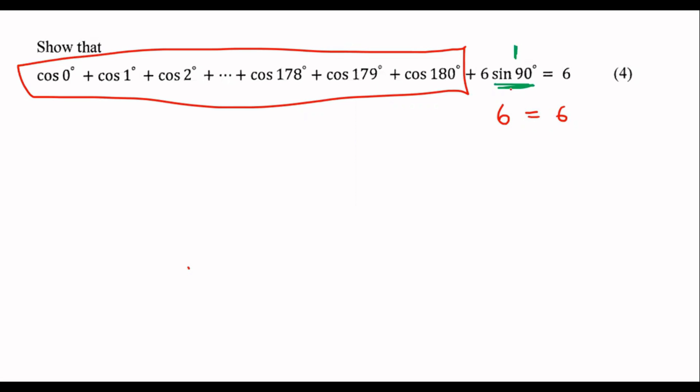So cos 0 we should know by now or if you just type it on the calculator is equal to one. Cos 1 don't know what that is. Cos 2 really don't know.